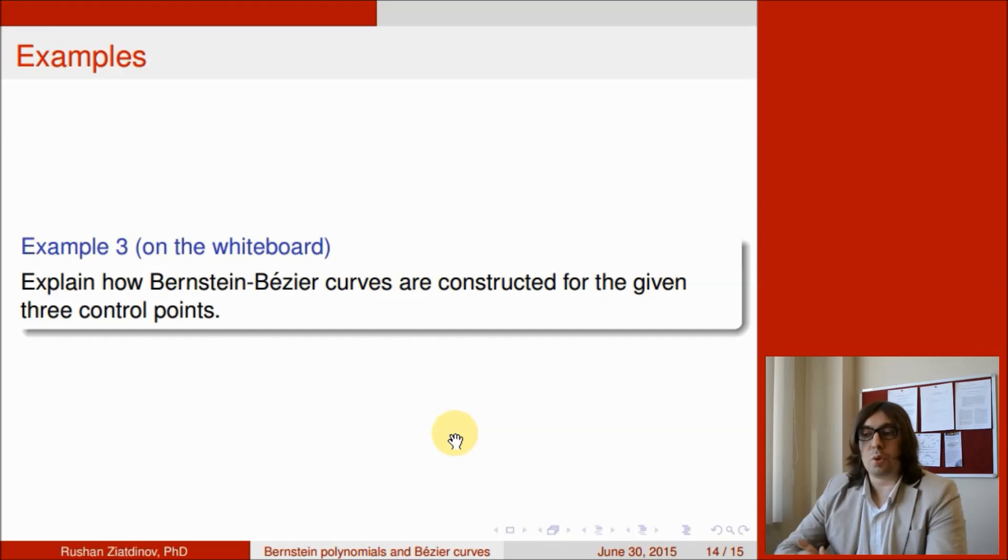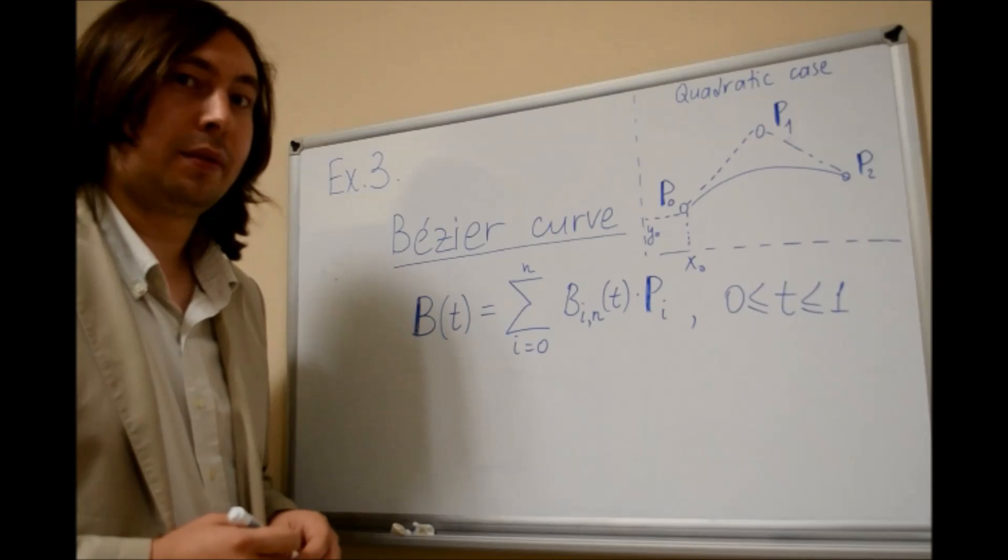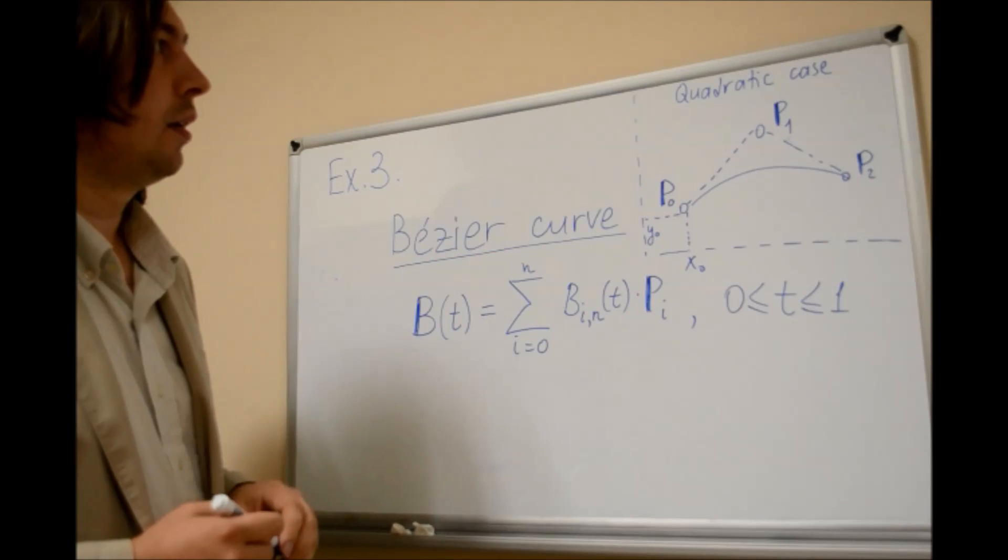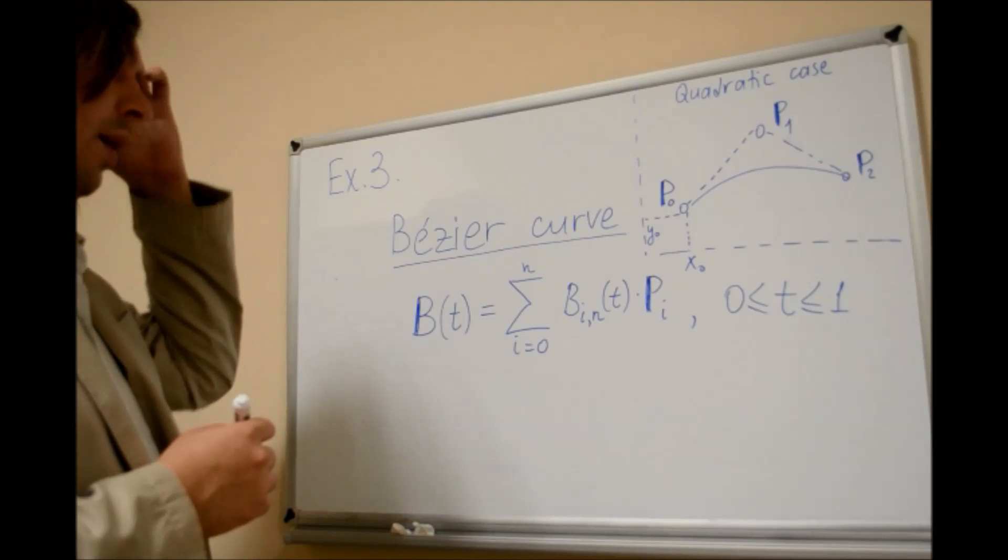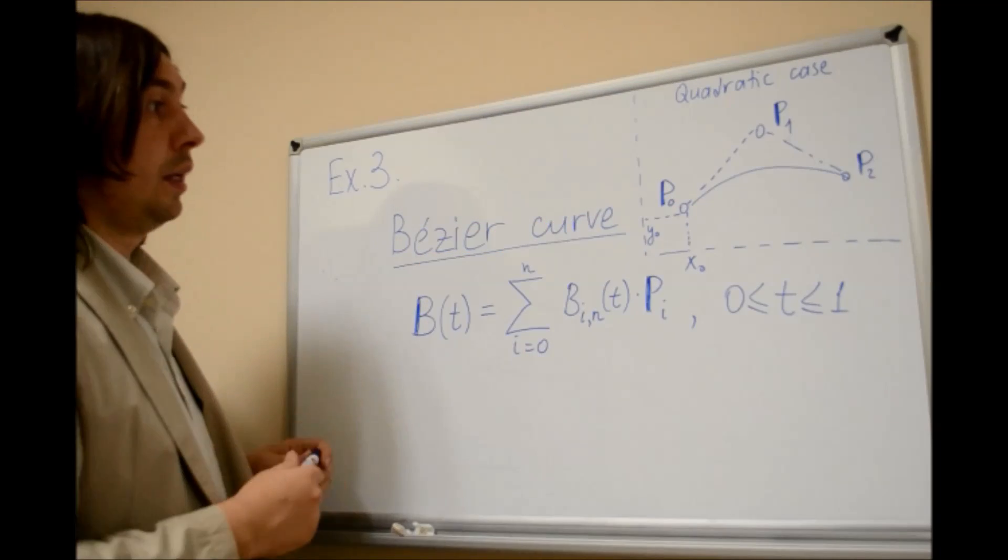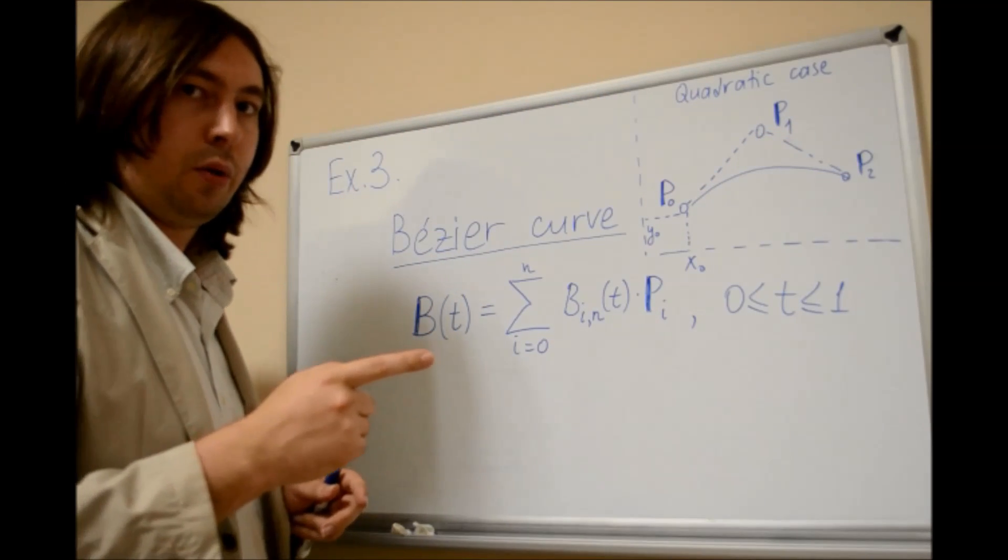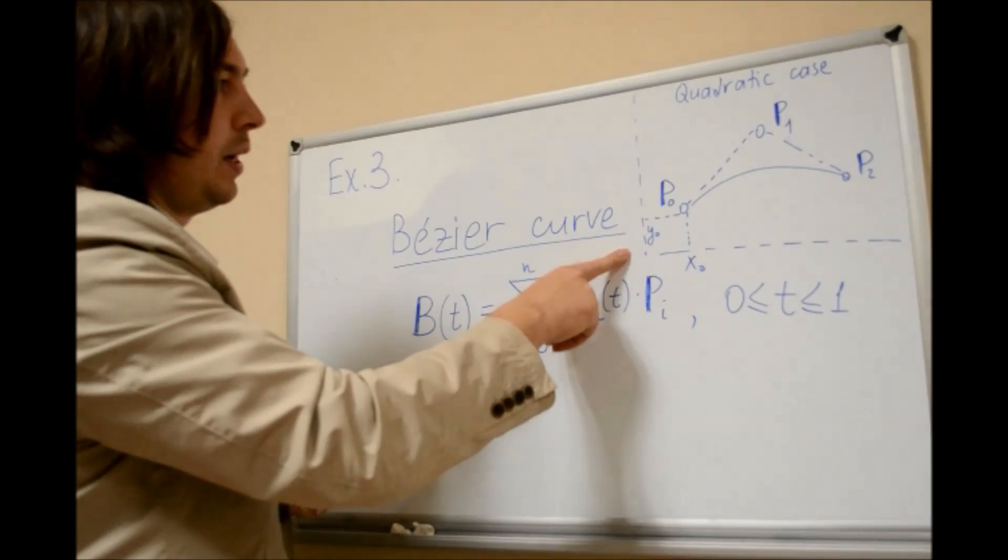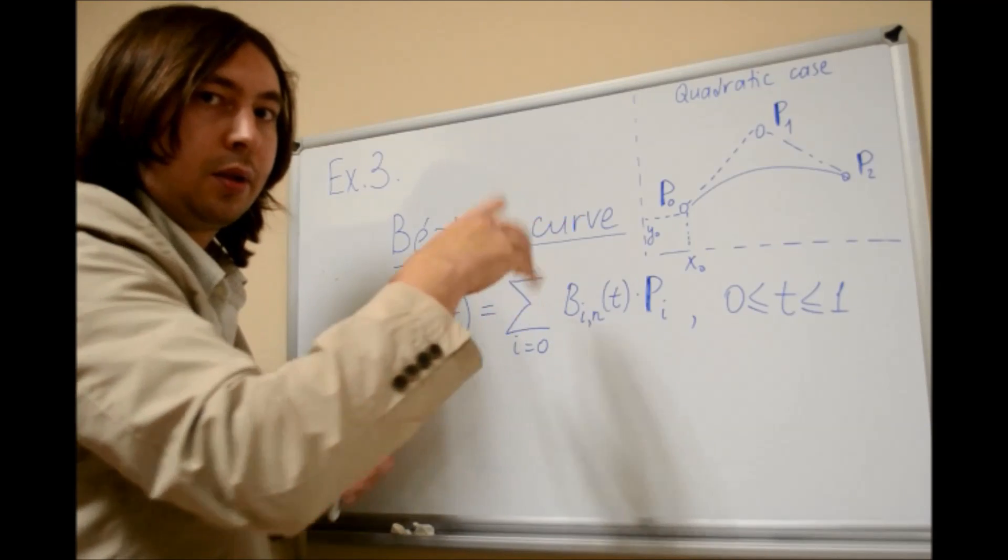Now I will show you the following example. Example number 3: explain how Bernstein-Bezier curves are constructed for the given 3 control points. So as you might see from here, we have 3 given points: P0, P1, and P2. Every point has its x-y coordinates. In the case of P0, we have x0 and y0, x1 and y1, x2 and y2, and so on if you have more control points.